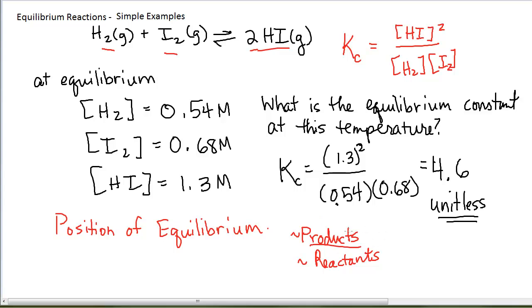If my equilibrium constant is greater than 1, that means this ratio gives me a numerical value that's greater than 1, which means my products are in higher concentration than my reactants in general. So an equilibrium constant that is greater than 1 is often referred to as a product-favored equilibrium. The position of the equilibrium is product-favored, or I can talk about the equilibrium lies to the right, since there are more products.